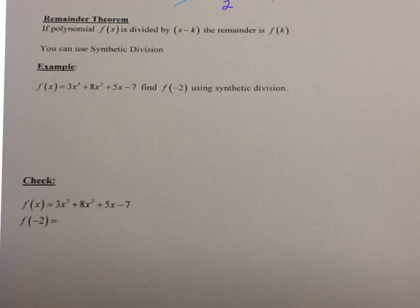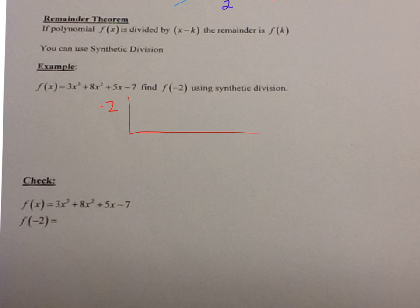Let's say I have f of x equals 3x cubed plus 8x squared plus 5x minus 7, and I want to find f of negative 2. You can use synthetic division to find f of negative 2. I'm going to put negative 2 on the outside, put down my coefficients: 3, 8, 5, and negative 7. First I bring down the 3.